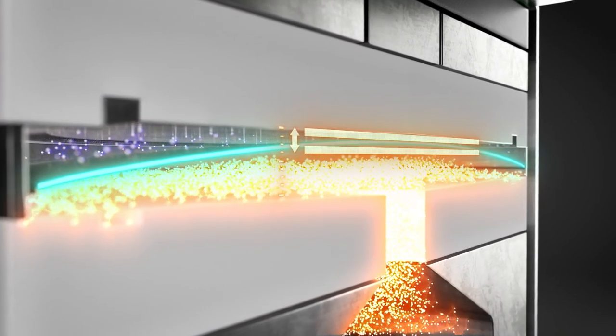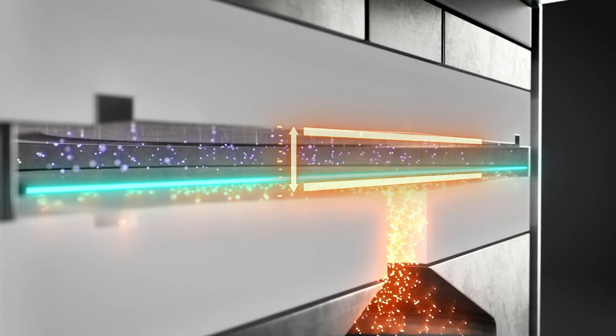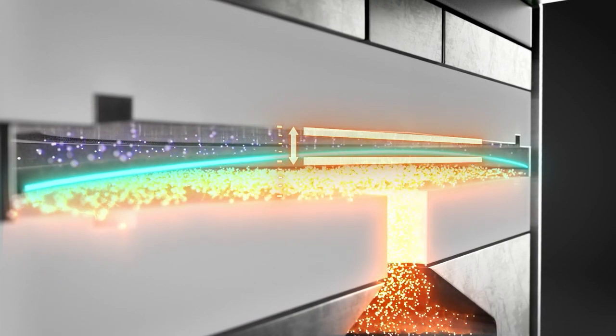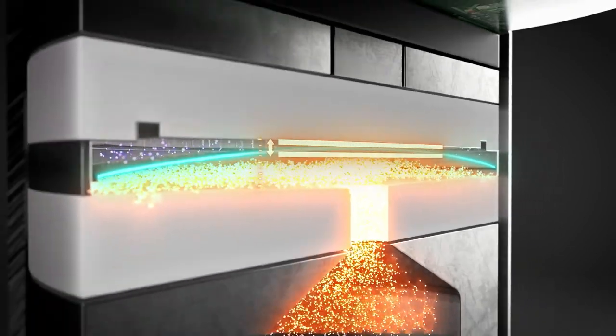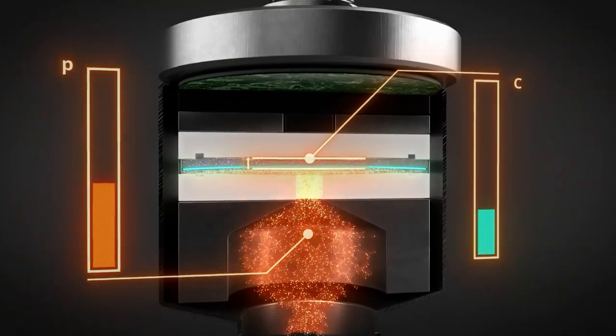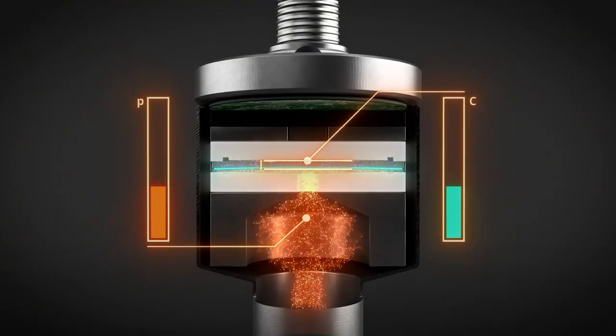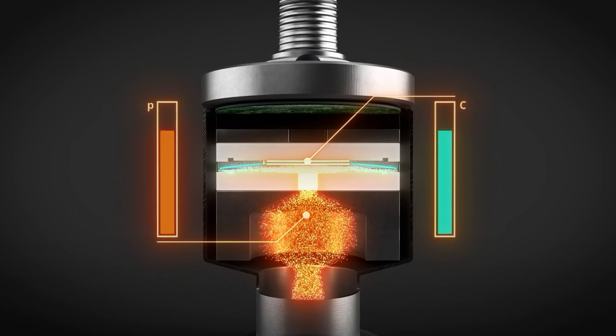As the diaphragm moves, the gap between the two electrodes widens and narrows. This movement affects the capacitance. When pressure is higher, the diaphragm moves closer to the fixed electrode.